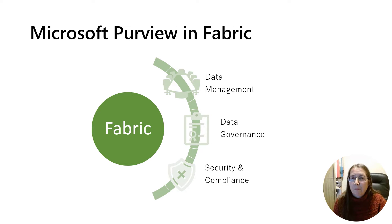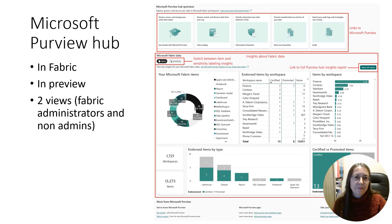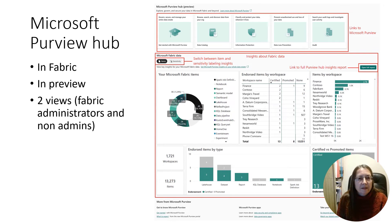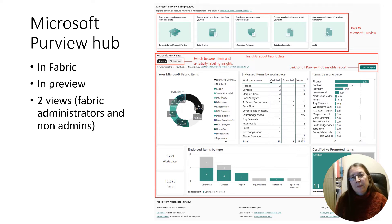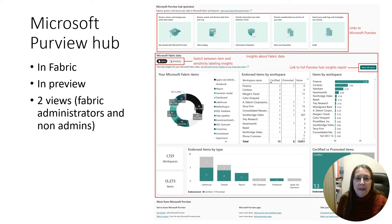The Purview Hub in Fabric covers three main elements: data management through the data map and data catalogue; data governance through data discovery, data estate health, and data creation; and security and compliance through information protection labels, data loss prevention, and audit. Within the Purview Hub, there is a centralized page which contains insights into inventory items — that's sensitive data and endorsement — identifying trustworthy data items. The gateway links specifically to Microsoft Purview governance and compliance portals for apps such as the data catalogue, information protection, data loss prevention, and audit. The Purview Hub has a view for Fabric administrators and a view for other Fabric users.